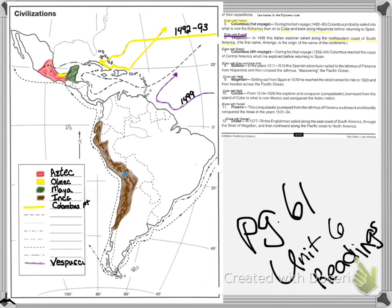Next is Columbus's fourth voyage. He did a total of four voyages over his years. In 1502 to 1504, Columbus reached the coast of Central America, which he explored before returning to Spain. That's your clue — he reached the coast of Central America — and you'll notice that line goes right into the Central American area.